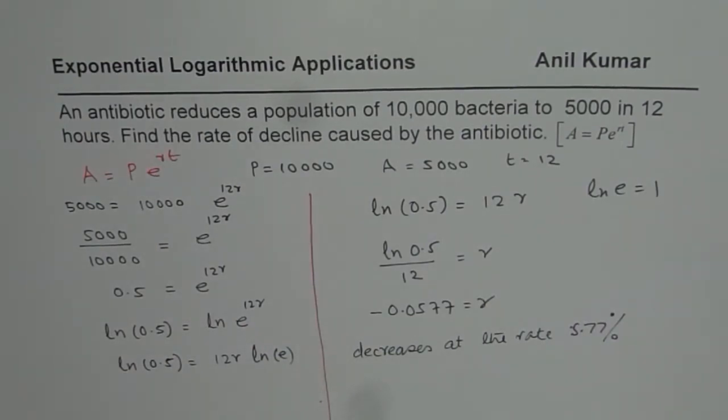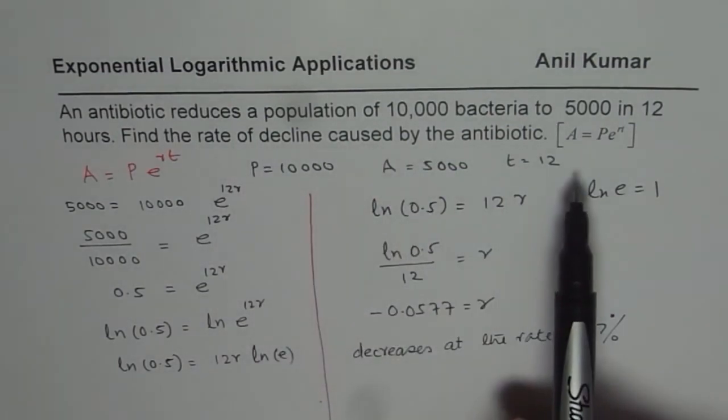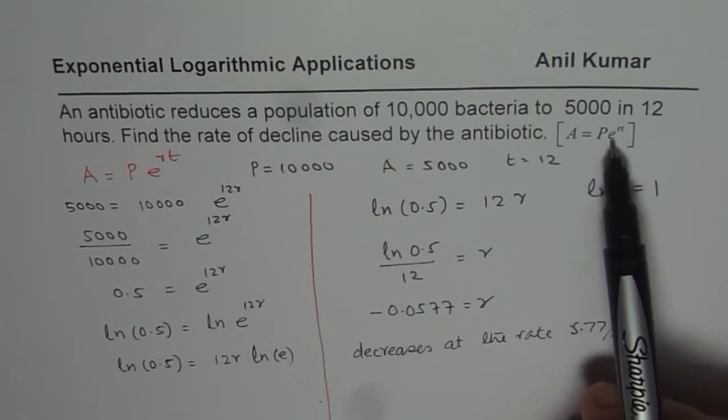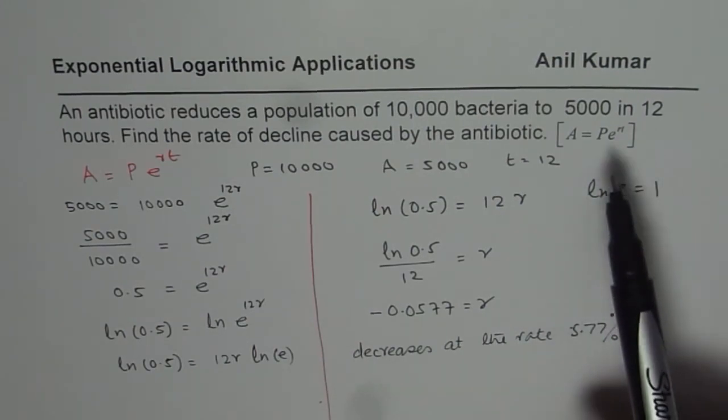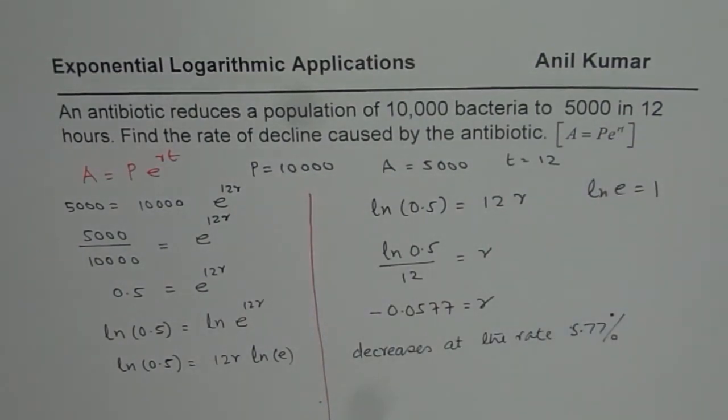We multiply by 100 to write it as a percent. The negative sign only indicates it decreases at this rate. Of course, decline suggests that. In the formula, since it was given as e to the power of RT, we use the same formula. Generally, whenever we have a declining rate, we use minus RT. That is the solution for the given question. I hope the steps are absolutely clear. Thank you and all the best.